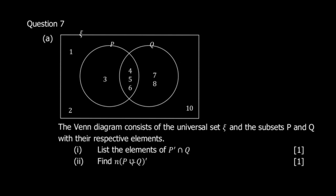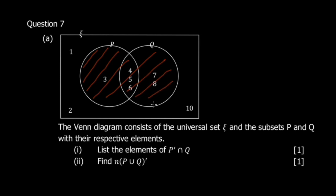The second part says find the number of elements in P union Q complement. P union Q would be all elements united across both sets. But complement means elements outside of that union. So the number of elements in (P union Q) complement would be elements 1, 2, and 10 — there are 3 elements.